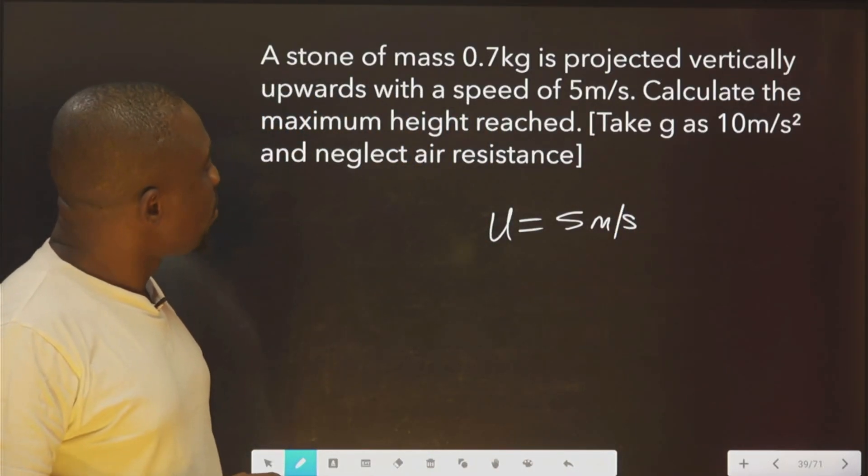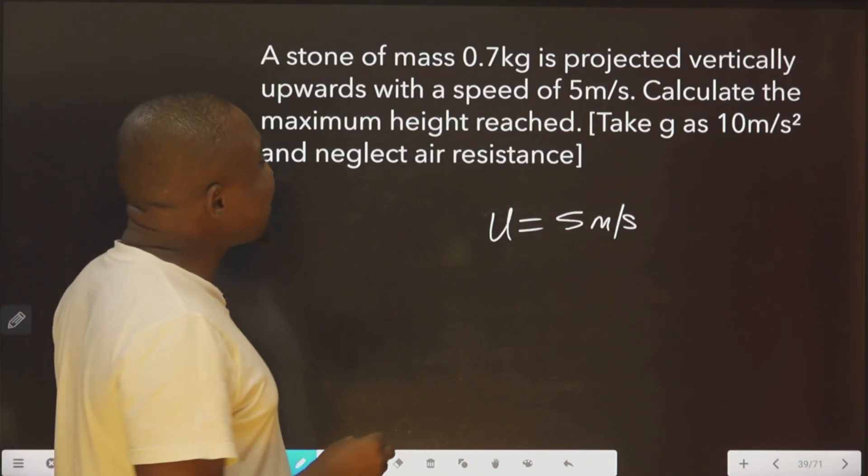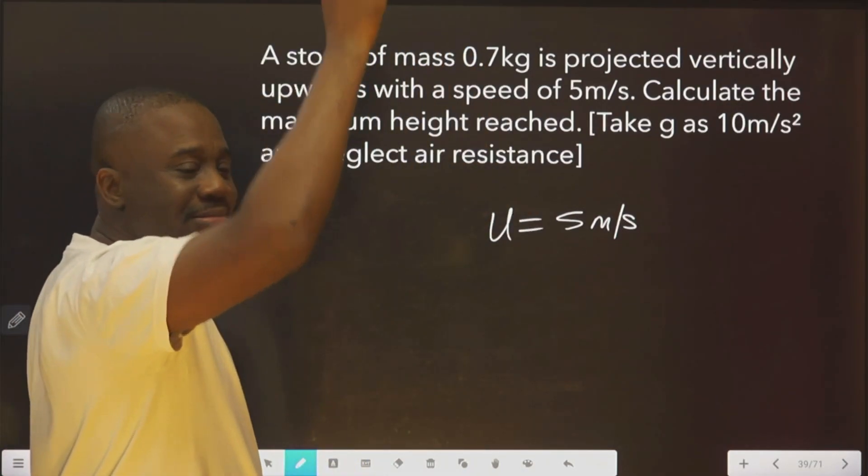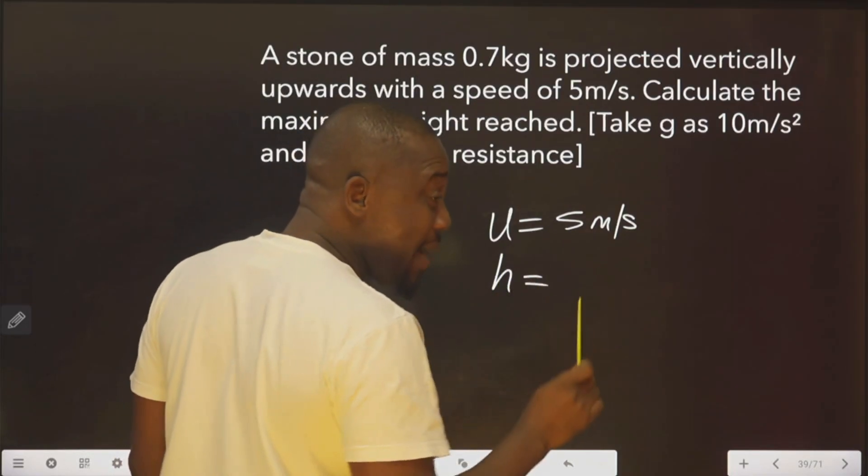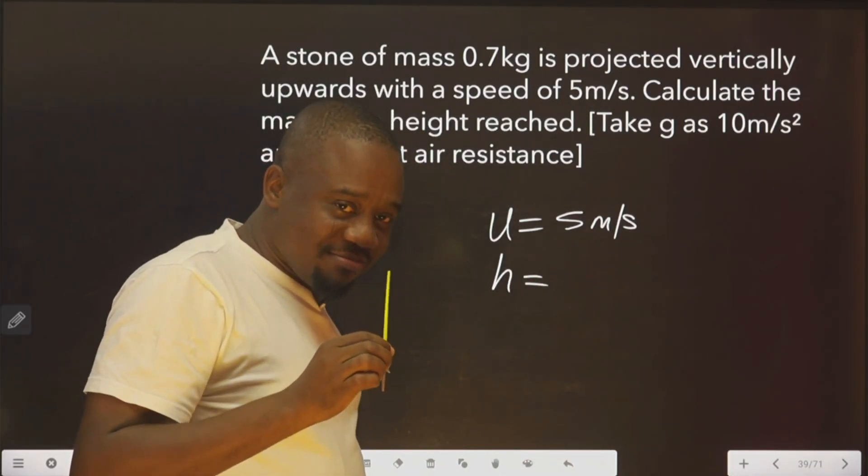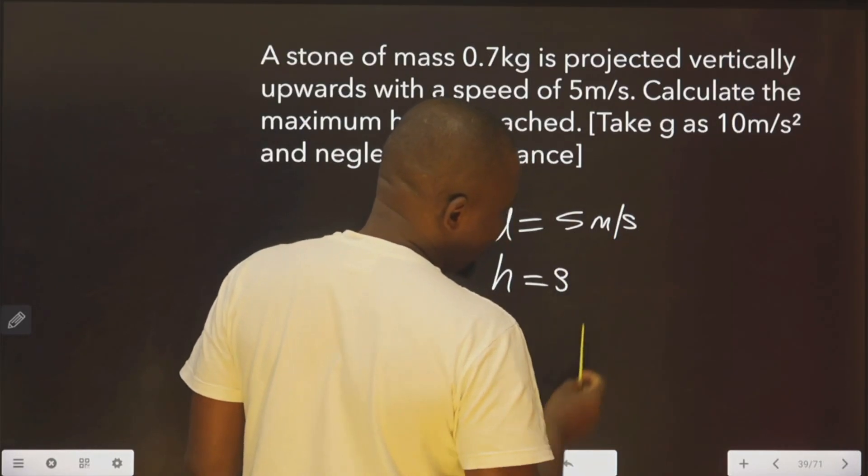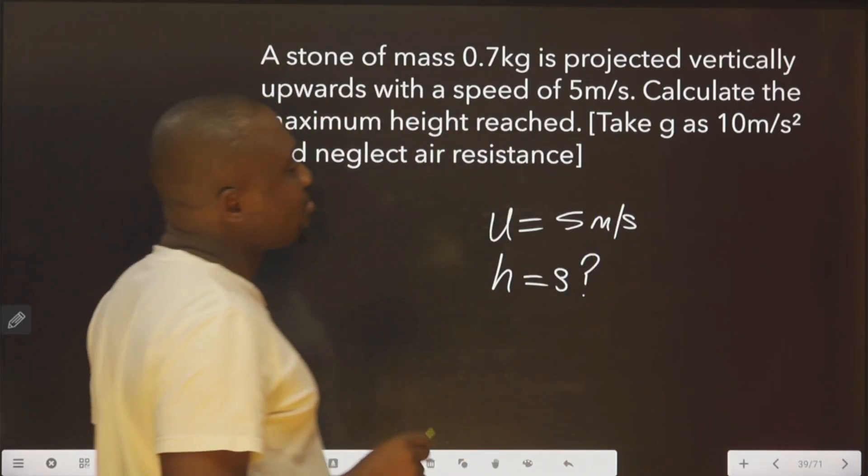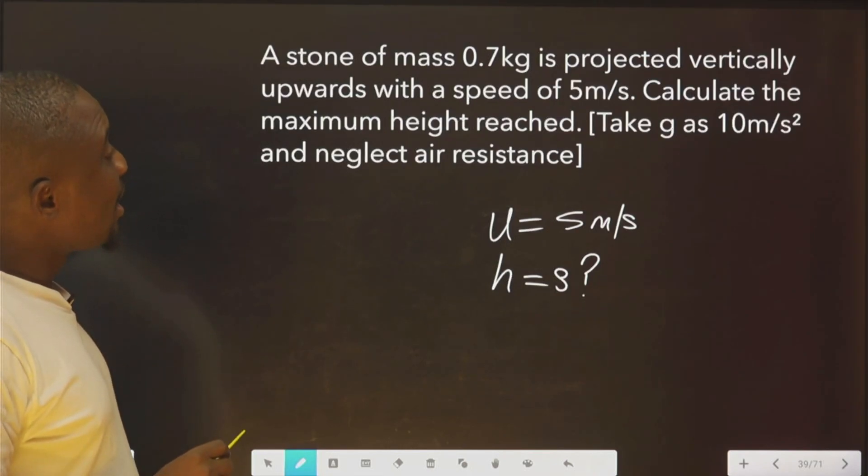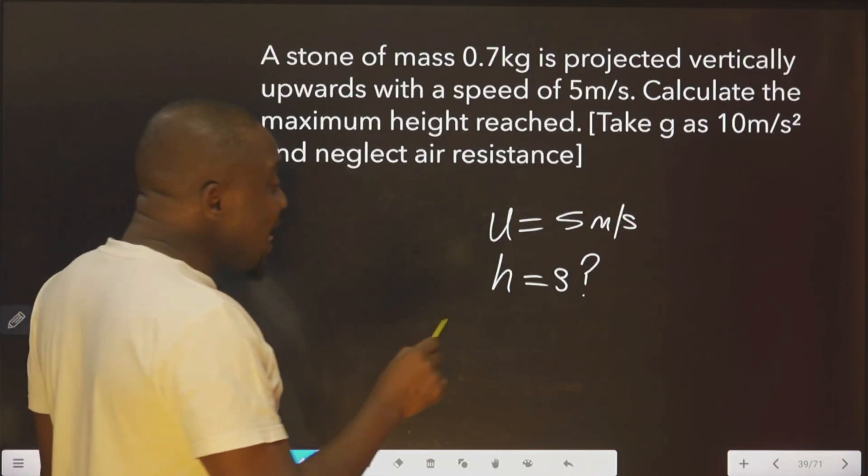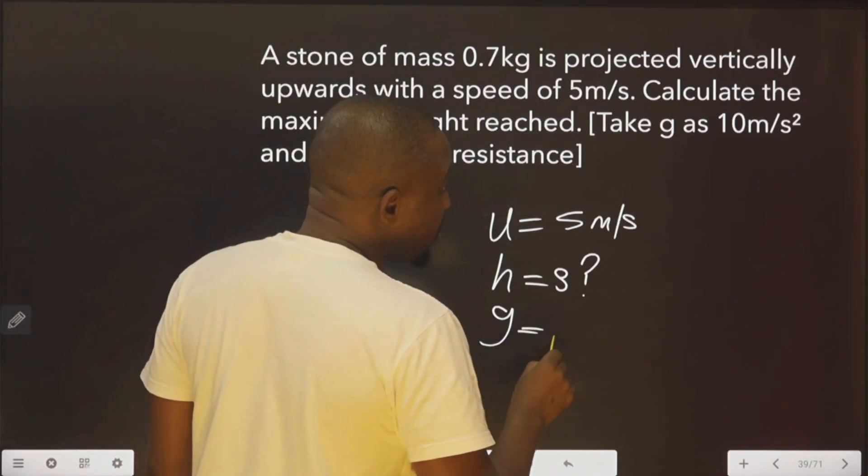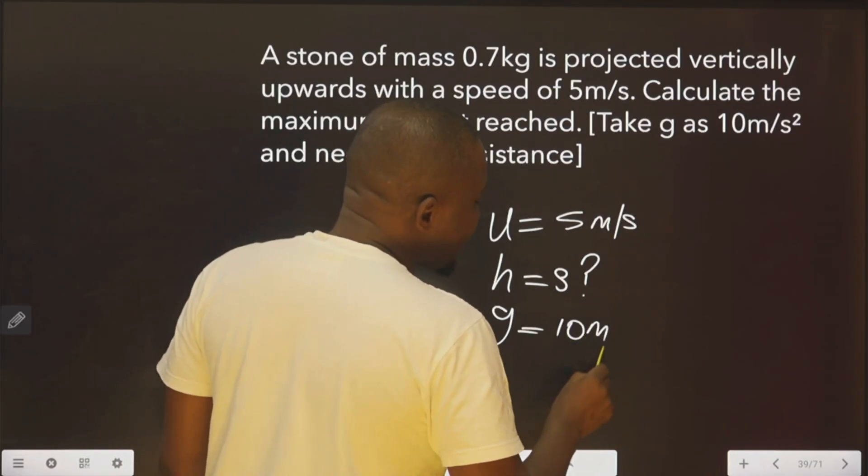Now, we are asked to calculate height. The h is not known. Remember h this time is synonymous to distance as s. We don't know. We are asked to take g to be 10 meters per second squared.